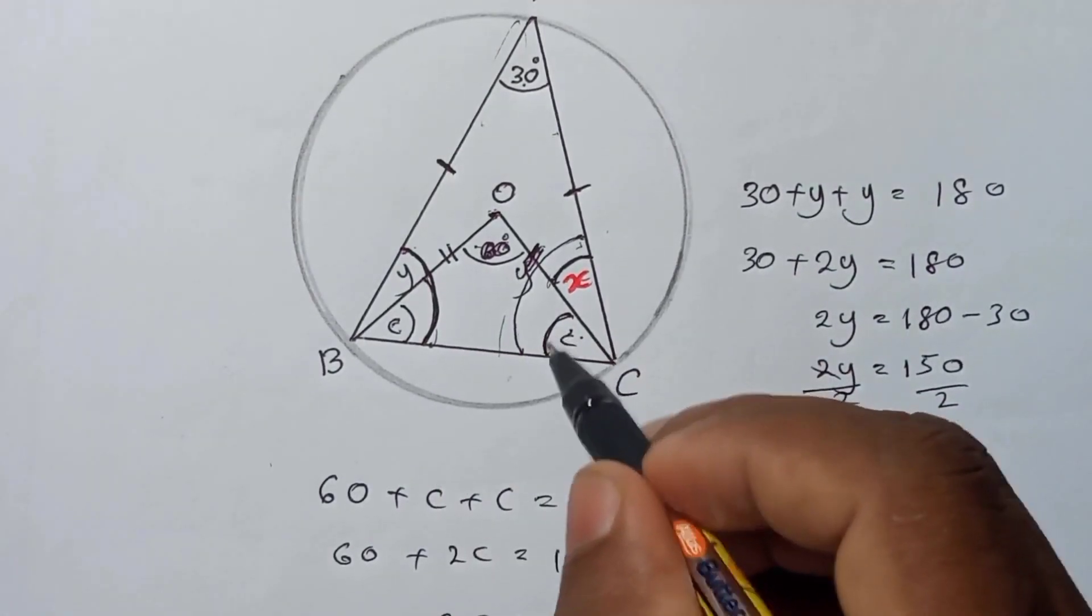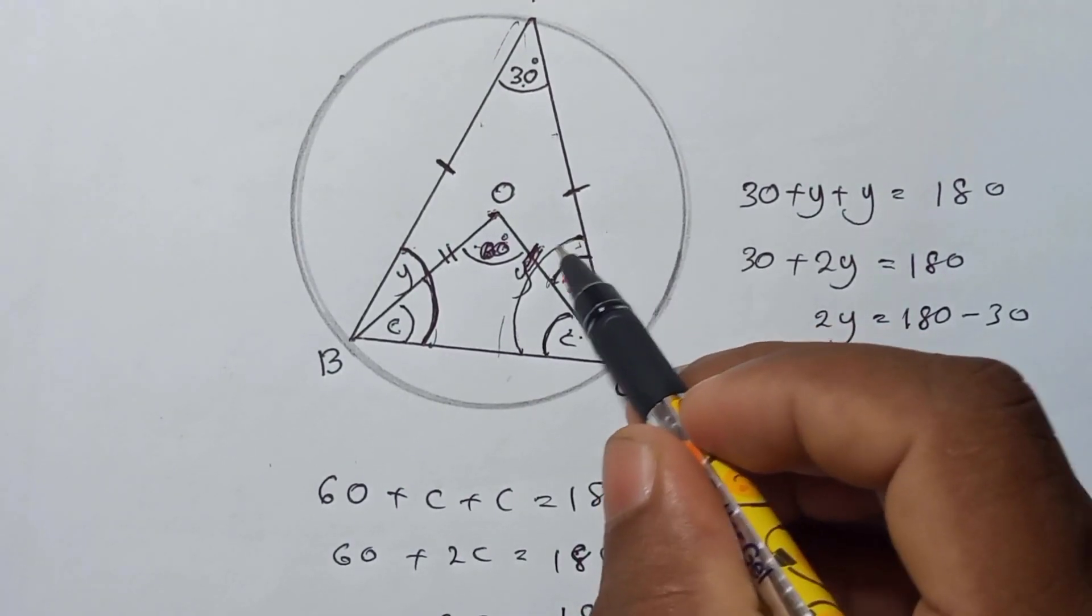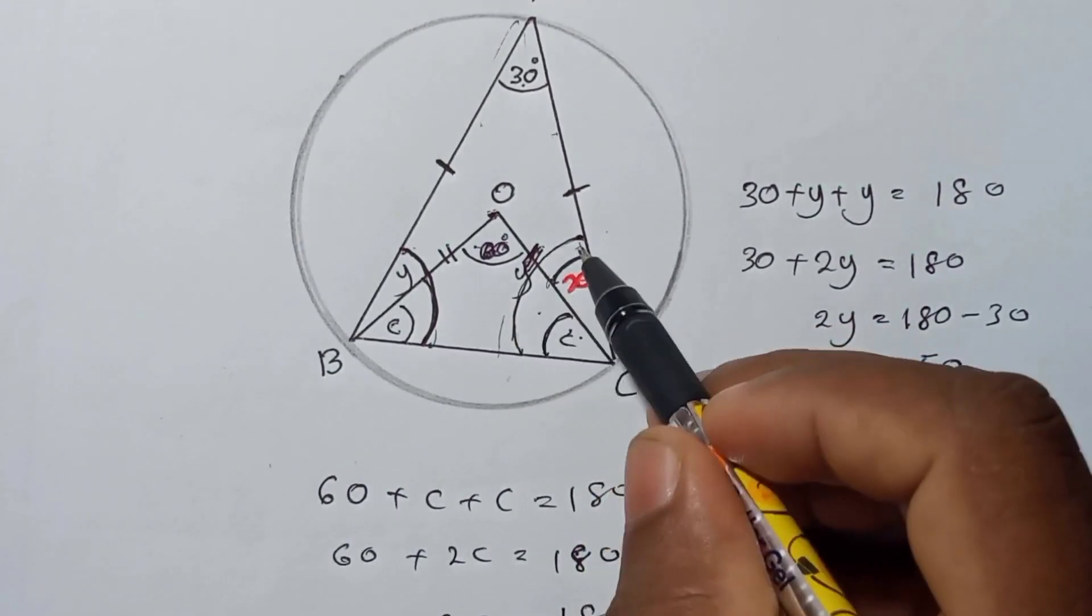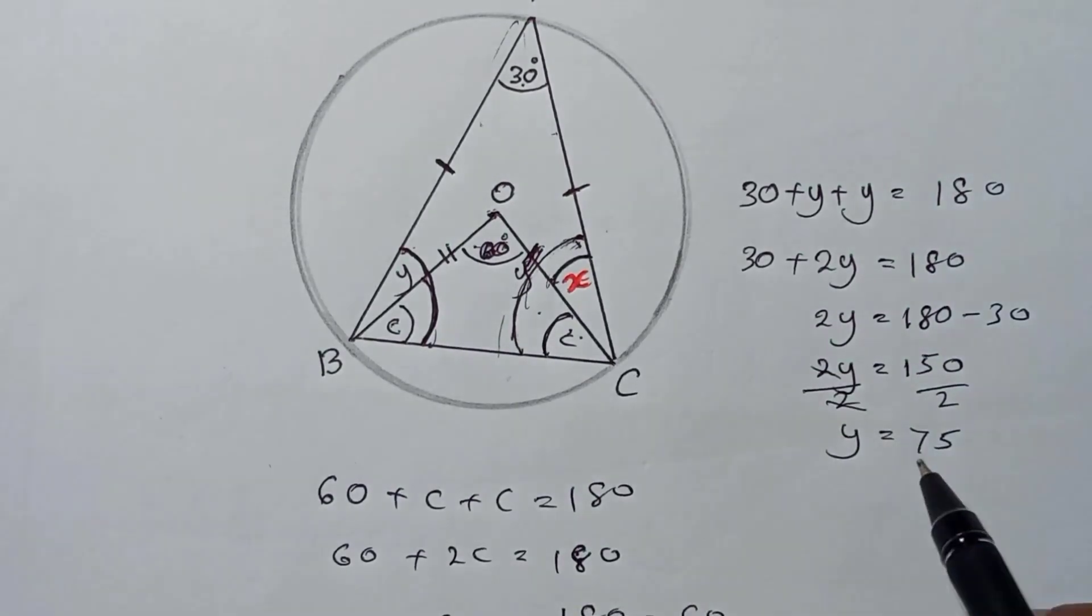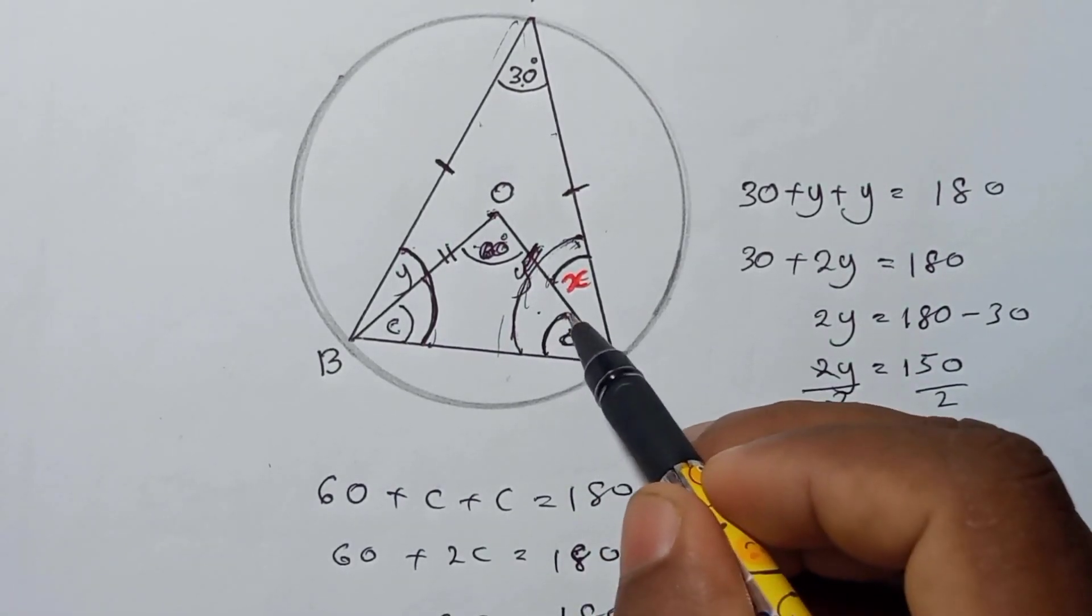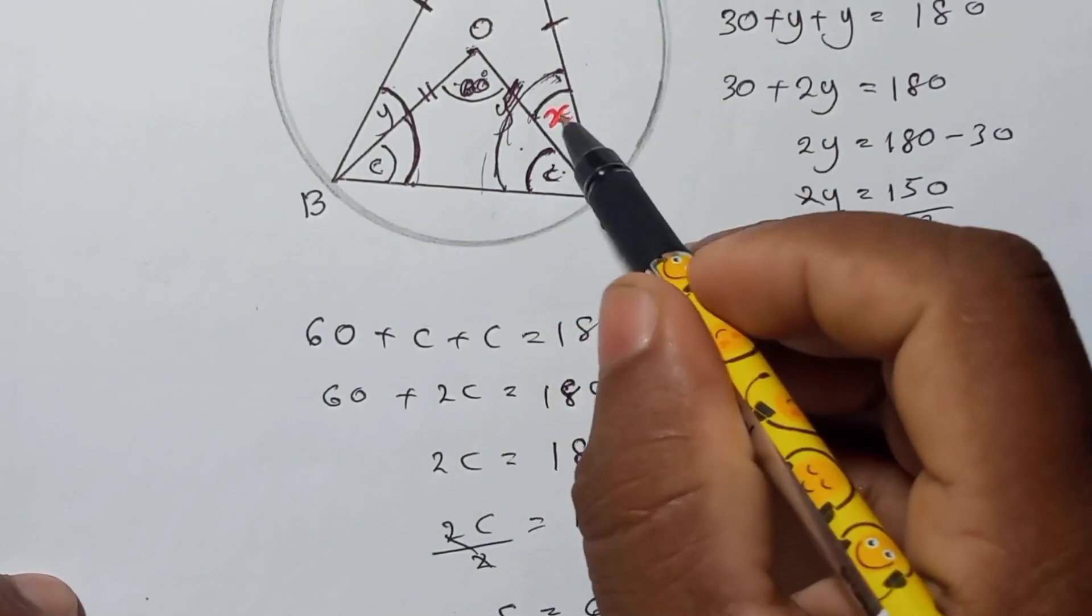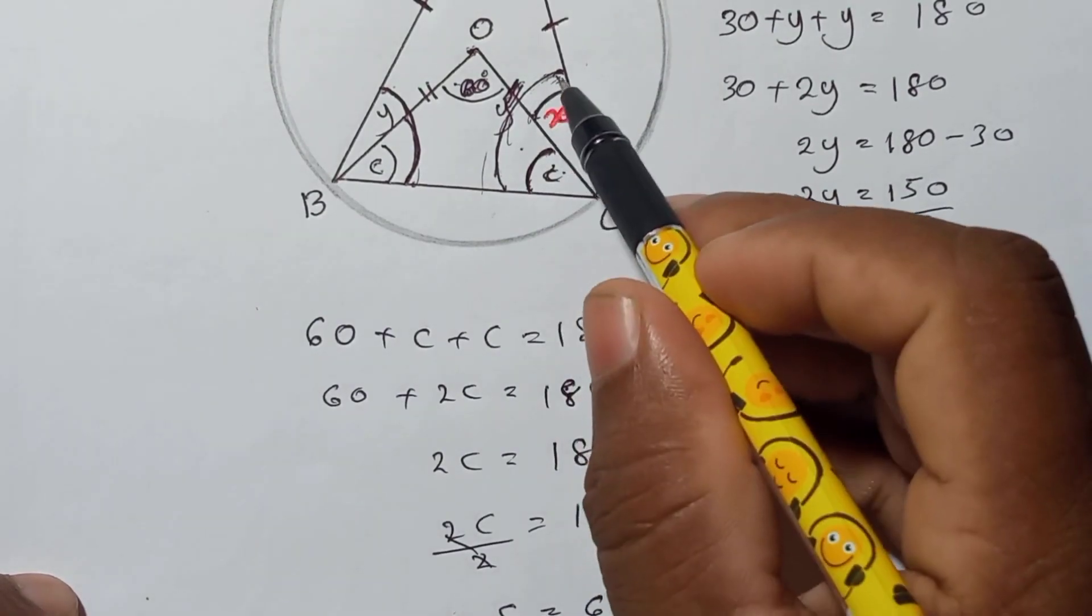You can understand here this is 60, that means this angle also 60, this part also 60. This is 60. Now you can get x. This angle and this angle both together is y. Y is 75, and this c, this one, that is 60. Now we know that this is 60.